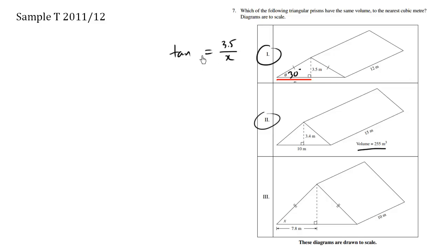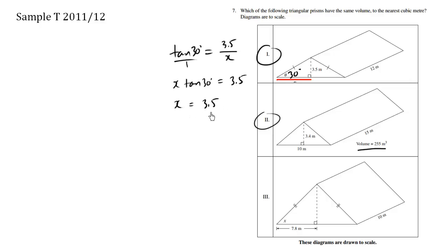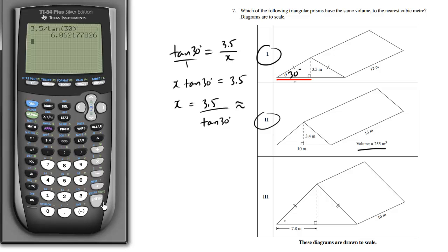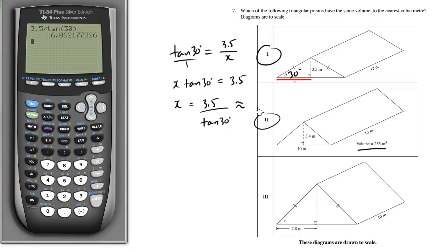Let's solve for x. We know theta is 30, so tan 30 equals 3.5 over x. We solve for x by cross-multiplying: x times tan 30 equals 3.5, so x equals 3.5 divided by tan 30, which is approximately 6.06. Be careful when using your calculator — make sure you're working in degree mode.